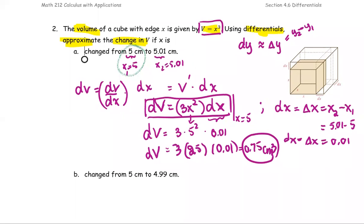And then if you want to compare with the exact change, which is on the side here, the exact change, which is the value of delta y, can be computed by subtracting y1 from y2. And y1 is the function value at x1, and y2 is the function value at x2. That means for y2 going to be 5.01 to the power of the third minus 5 to the power of the third.